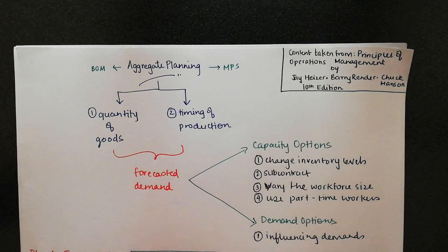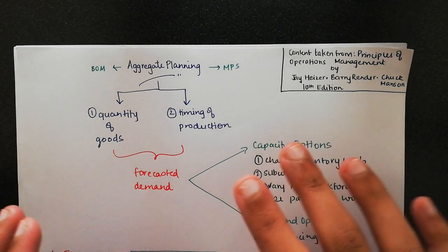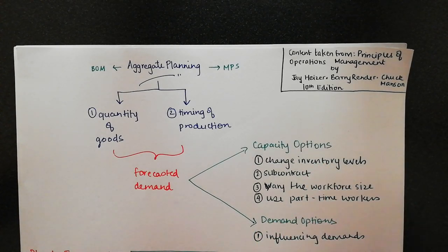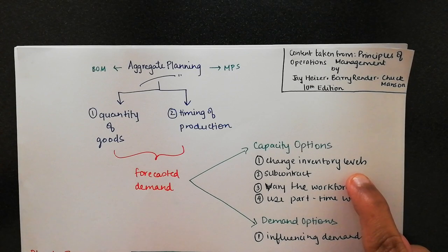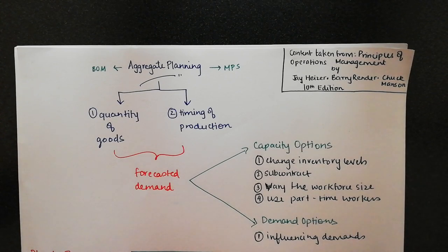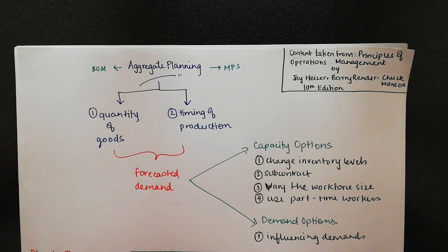To forecast demand, you need to have strategies. Aggregate planning has two main strategies: capacity options and demand options. Capacity options basically means that you as an operations manager have certain control over certain variables. You can change inventory levels, subcontract work to other people who are more efficient — basically outsourcing — and you can vary the workforce size, using part-time workers and so forth. All these variables are under your capacity to change.